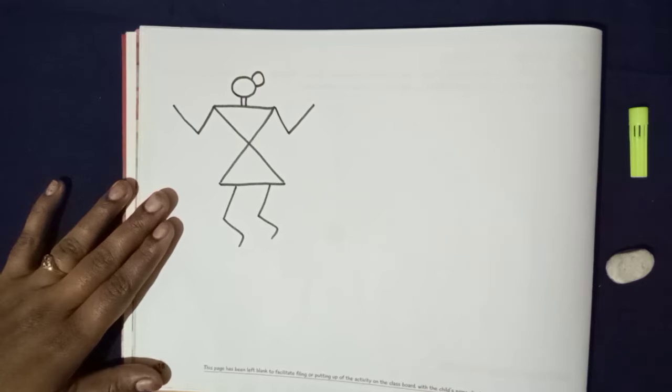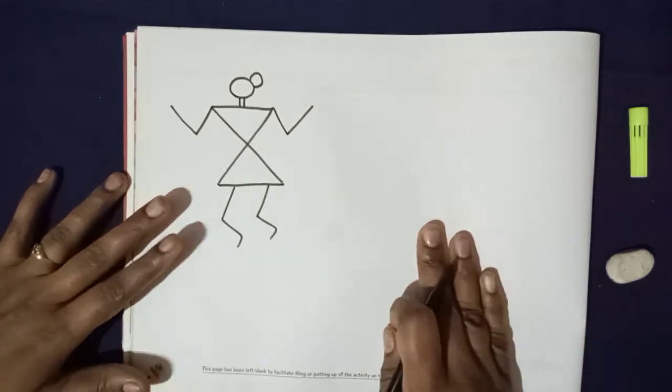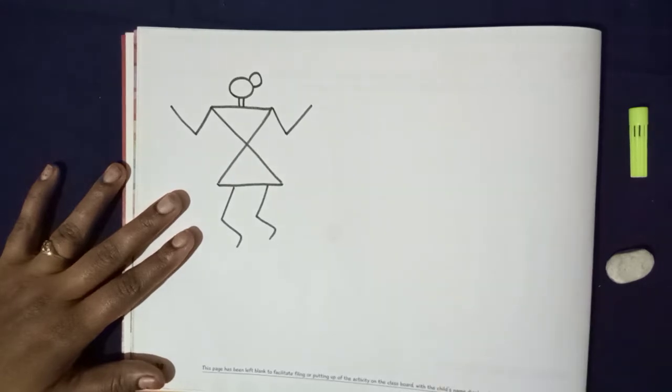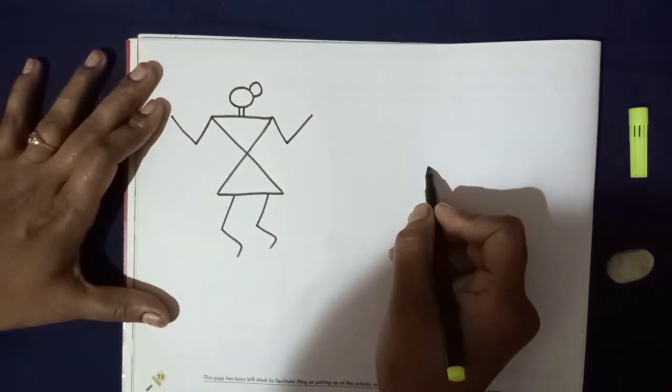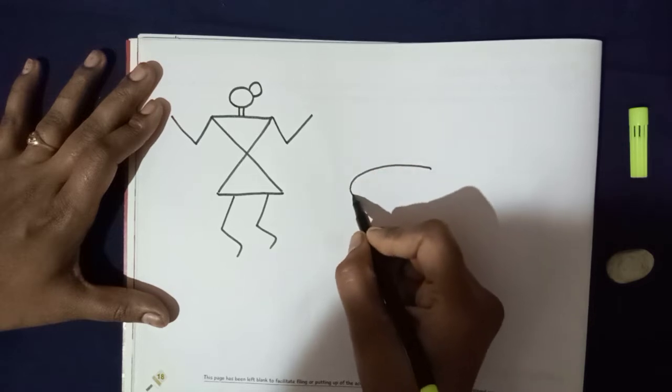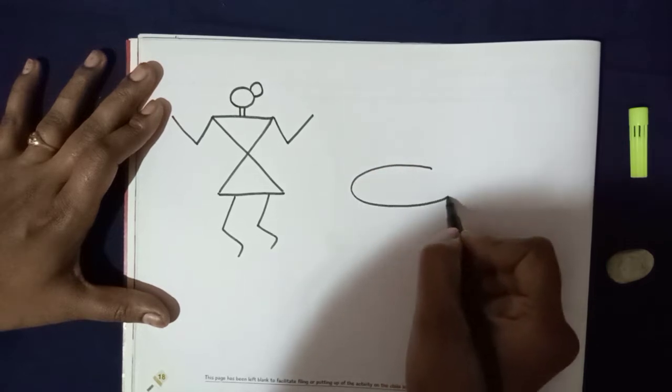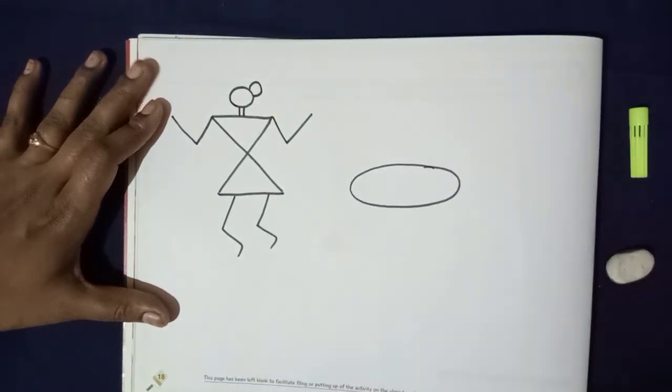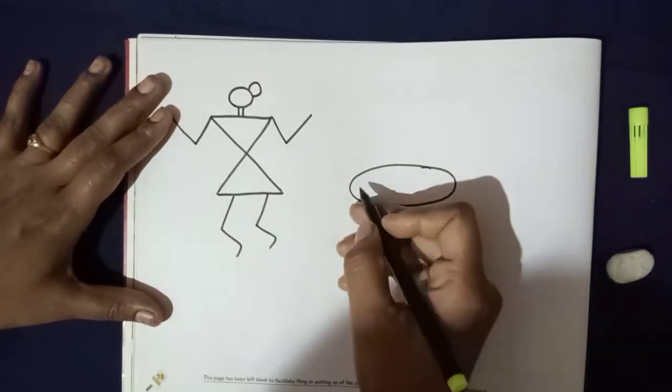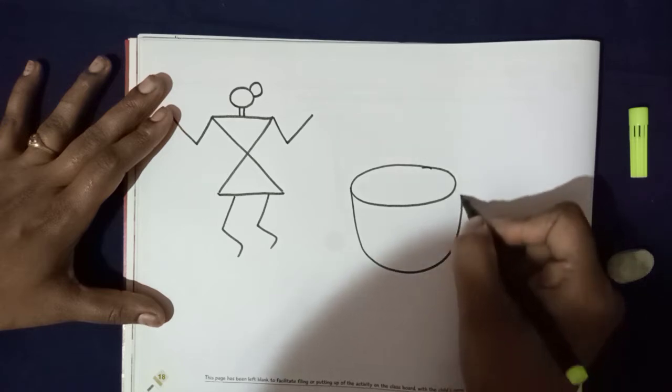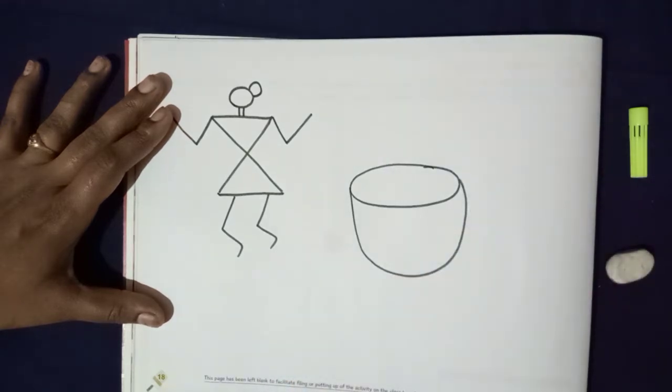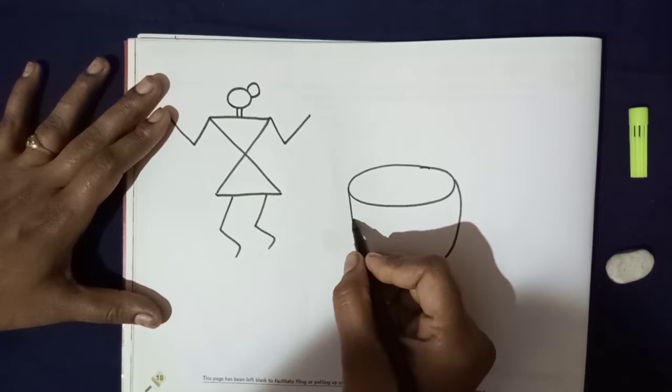Now children, we will draw drum. So children, we will draw oval shape. Aap sabko oval shape aata hai na? See, like this. Okay, first we will draw oval shape and then we will draw semi-circle shape. Like this.